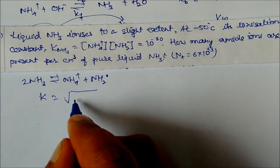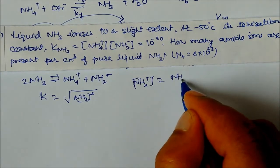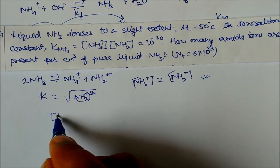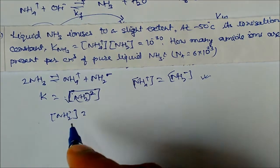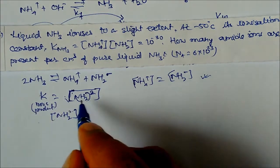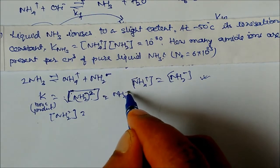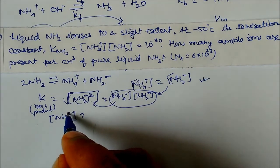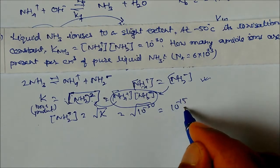The ionic product K = [NH₄⁺][NH₂⁻]. Since [NH₄⁺] = [NH₂⁻] in pure liquid ammonia, K = [NH₂⁻]². So [NH₂⁻] = √K = √(10⁻³⁰) = 10⁻¹⁵ molarity. In 1 liter we have 10⁻¹⁵ moles of amide ions.